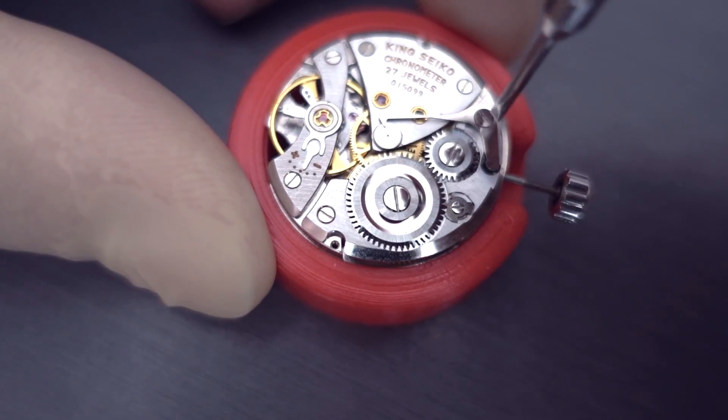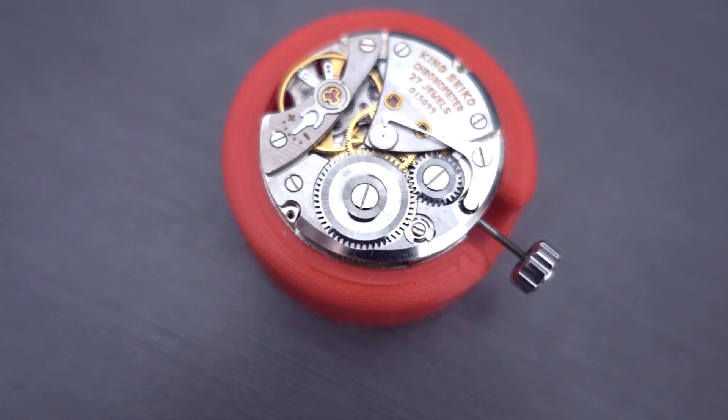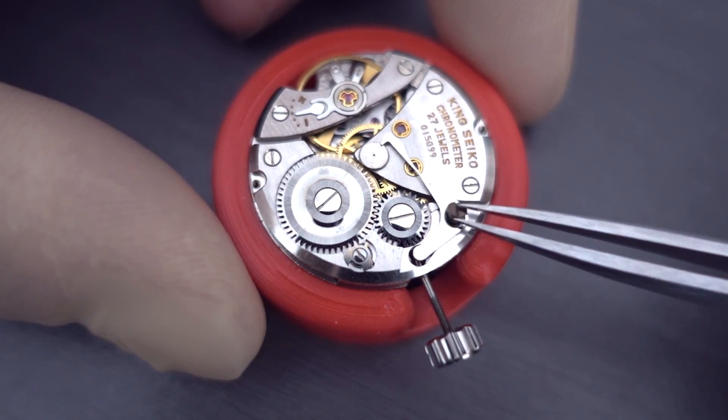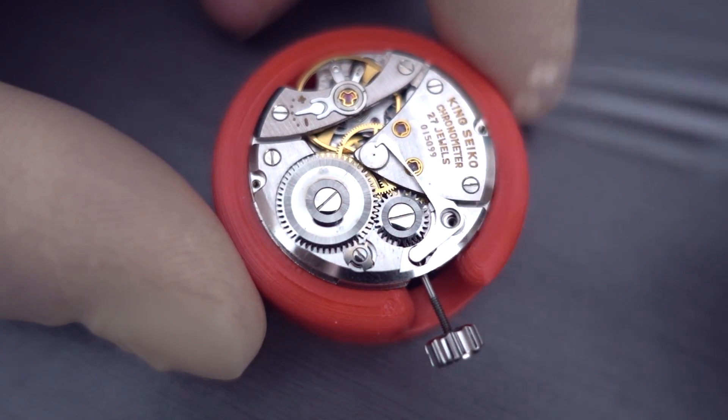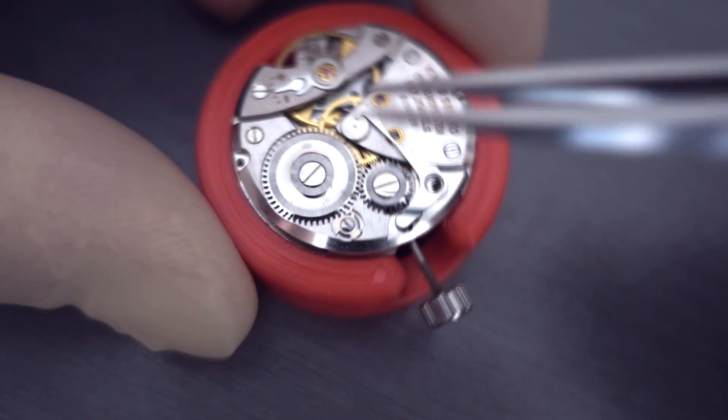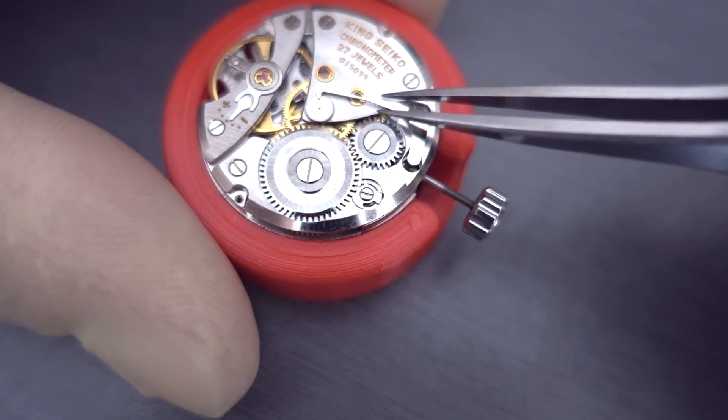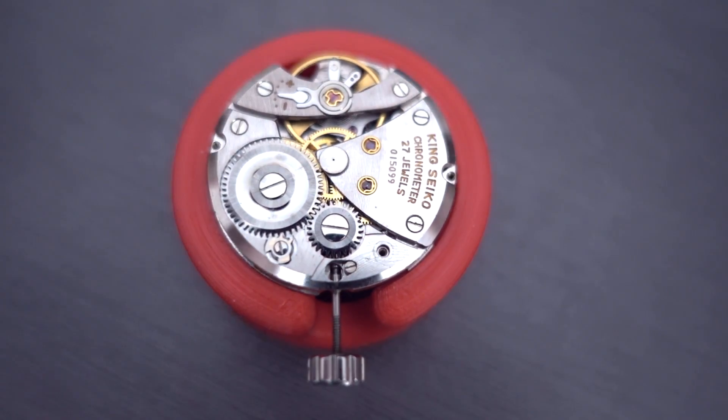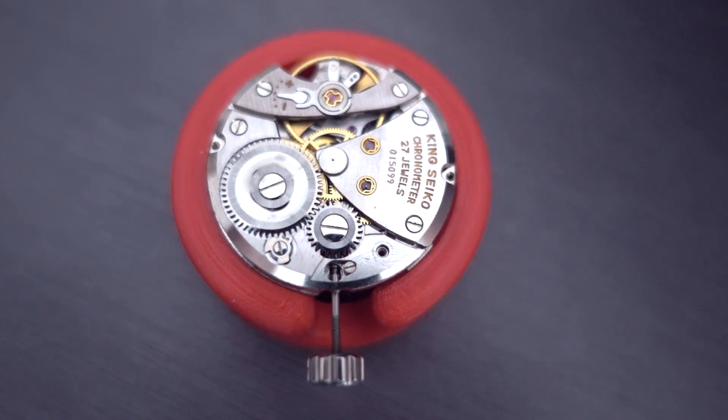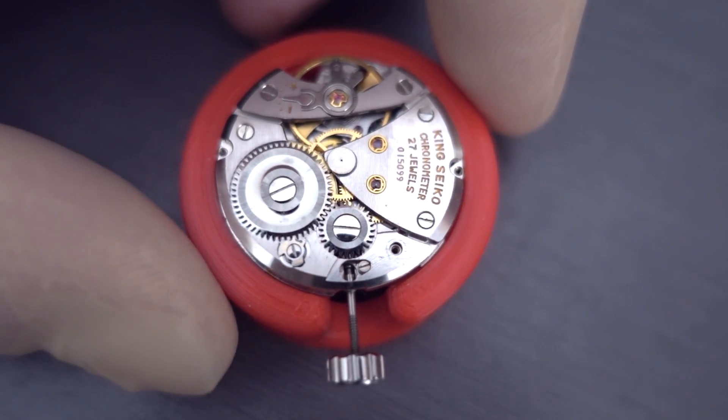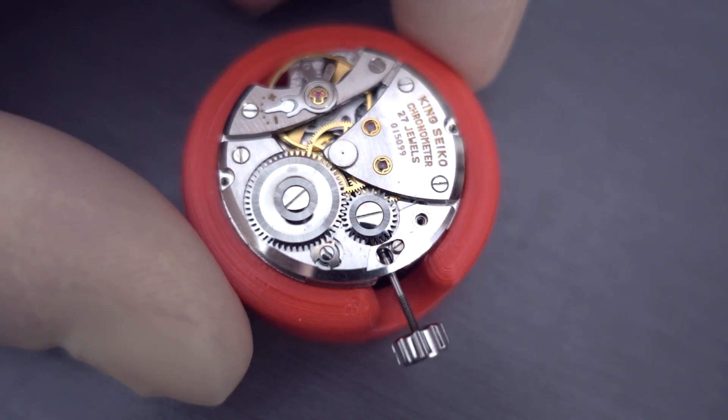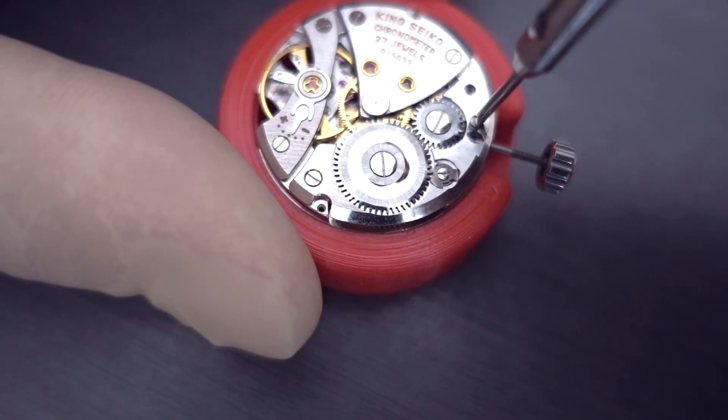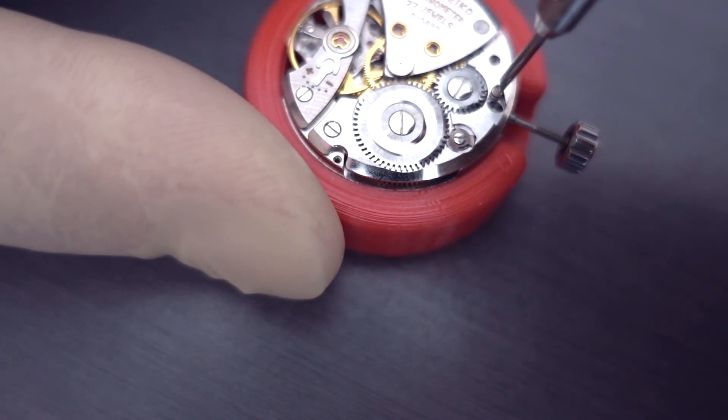Quite often on these watches that's actually missing because it's quite delicate and prone to breaking. So what's usually happened is that they've broken in the past or corroded and someone simply removed it. But in this case it's present. And that wheel that it connects to, which is on top of the fourth wheel, that's a paw wheel. So the way that hacking lever works is it's got a little tooth that digs into the paw wheel to stop the movement when you're setting.